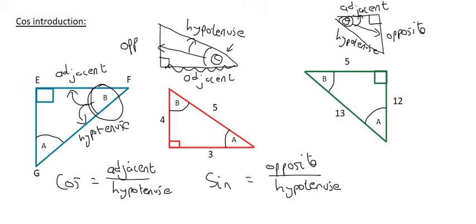Cos for them was just the adjacent over the hypotenuse. They don't want to say adjacent over hypotenuse the whole time, so they just said, 'Hey, what is cos? Or hey, what is sin?' Cos is adjacent over the hypotenuse whereas sin is opposite over the hypotenuse.